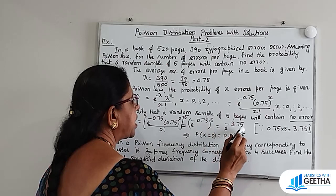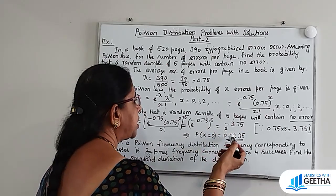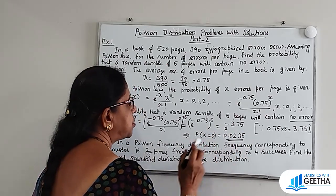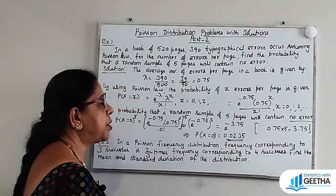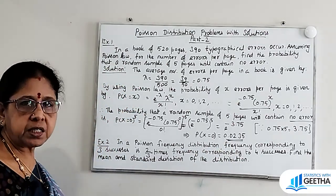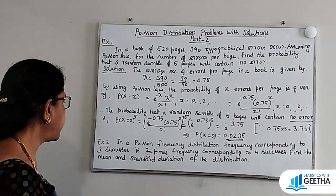Computing e^(−3.75) using a calculator, the probability P(X=0) is equal to 0.0235. So the answer is 0.0235.